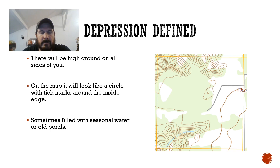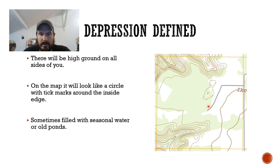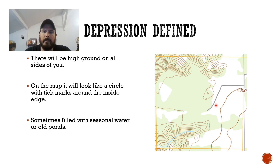The last definition is depression. You'll have high ground on all sides of you as you're standing on the ground. On the map it's going to look like a circle with little tick marks going to the inside of the circle. The little circle inside there also has one tick mark. It'll usually be like an old pond or something filled with water — low ground like that.